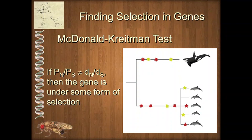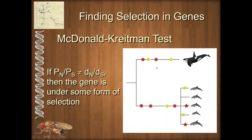If the dN-dS and pN-pS ratios are significantly different from one another, we have good evidence that this gene has been under selection. The type of selection may vary — for example, if there was strong purifying selection within a species so the gene was important but couldn't vary much, the pN-pS ratio within the population would be very small. If the gene had been free to evolve historically and accumulated many mutations, the between-species ratio would be larger. So differences between these ratios can indicate different types of natural selection, and that is the McDonald-Kreitman test.